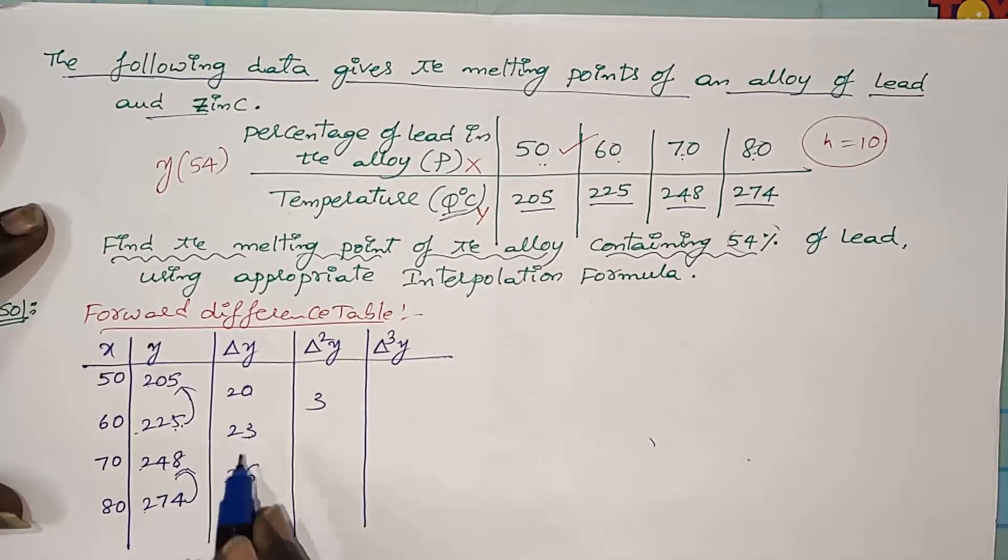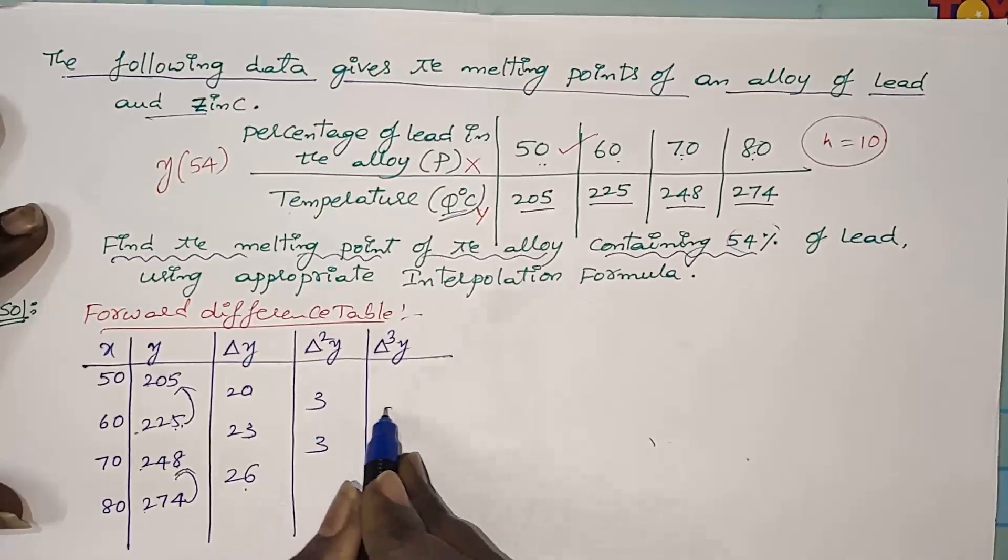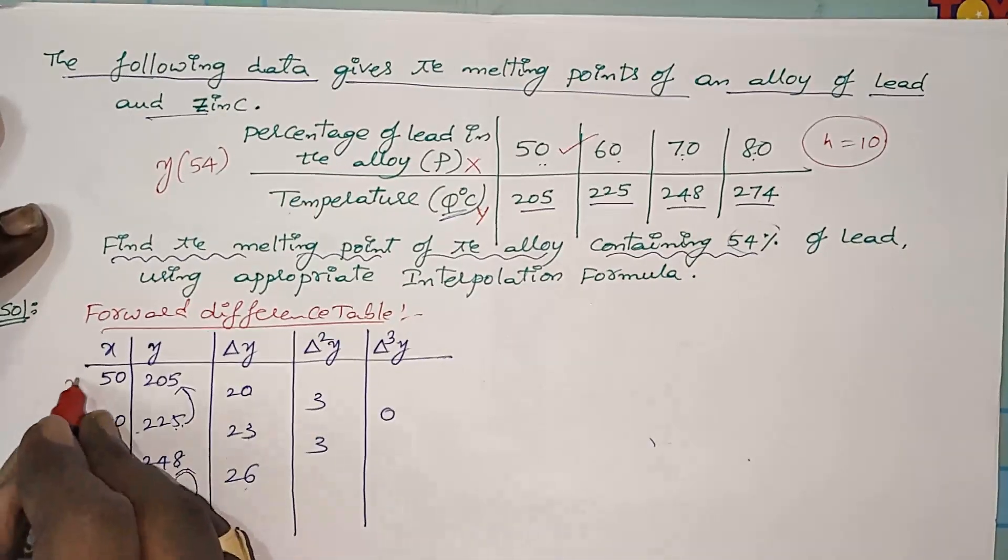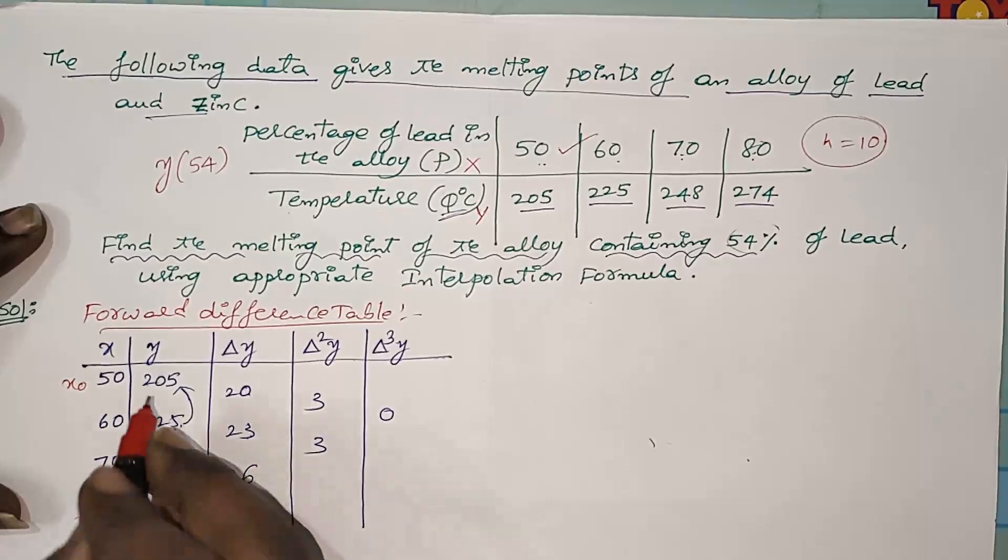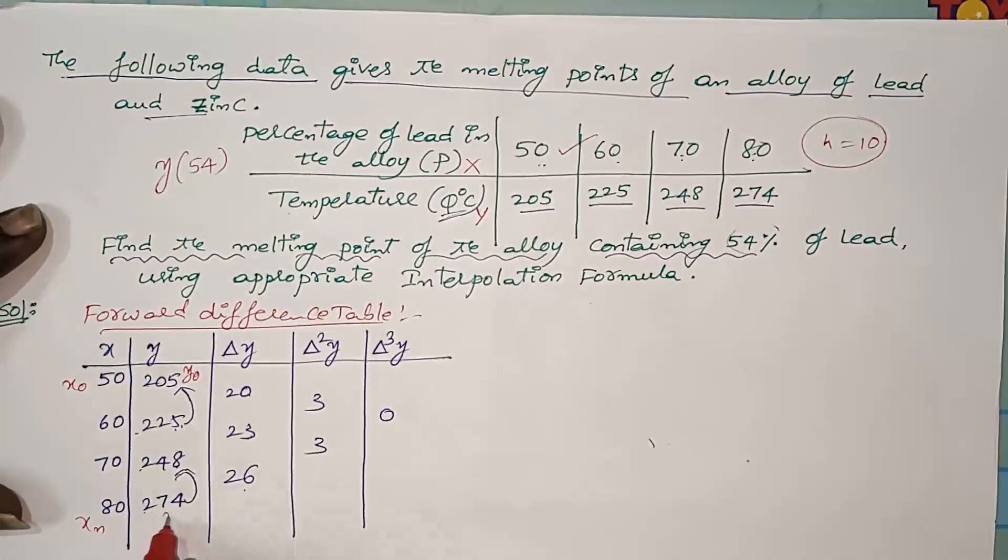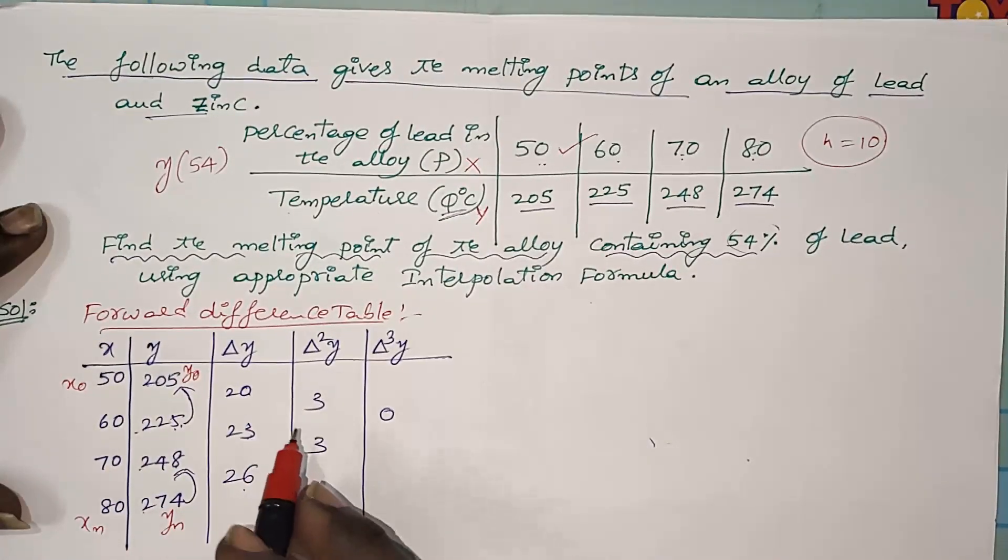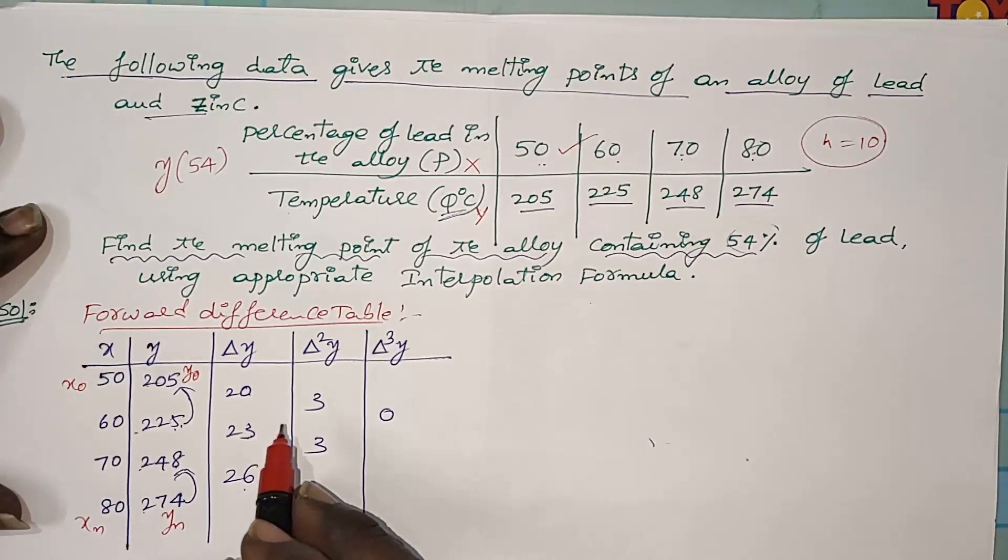23 minus 20 is 3, 26 minus 23 is 3, and 3 minus 3 is 0. This is X naught and this is Y naught. We are going to apply Newton's forward interpolation formula.